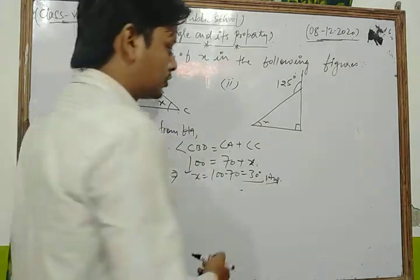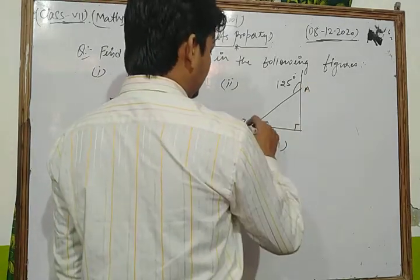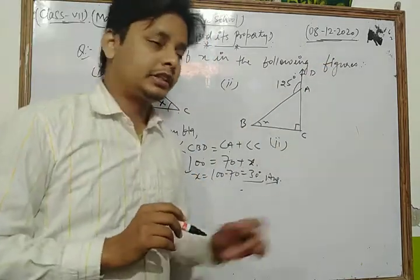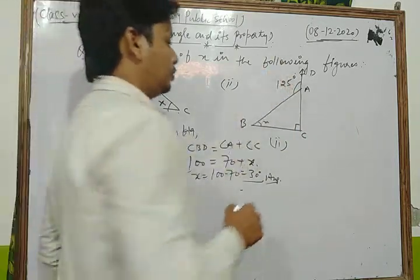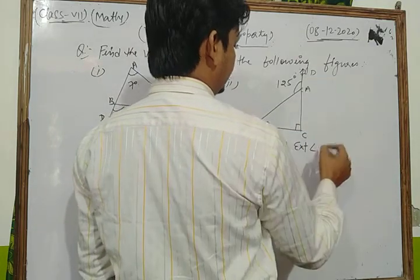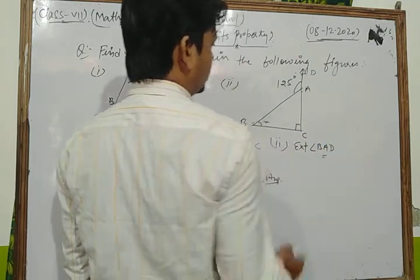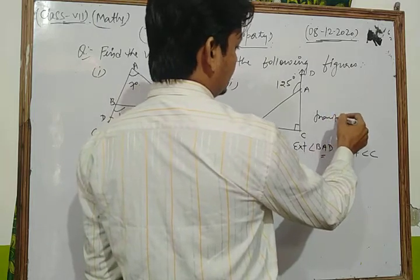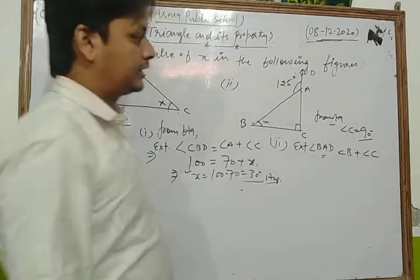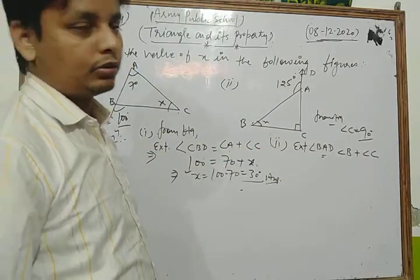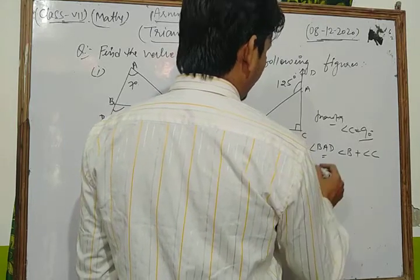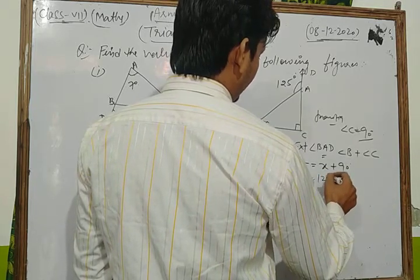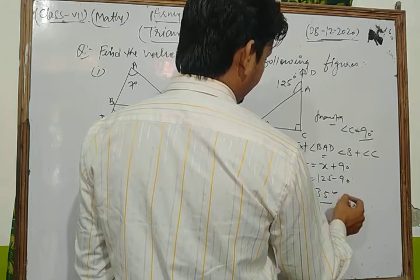Similarly for the second part, the exterior angle BAD is equal to the sum of its two opposite interior angles: angle B plus angle C. From the figure, angle C is a right angle equal to 90 degrees. So 125 equals x plus 90, giving x equals 125 minus 90, which is 35 degrees.